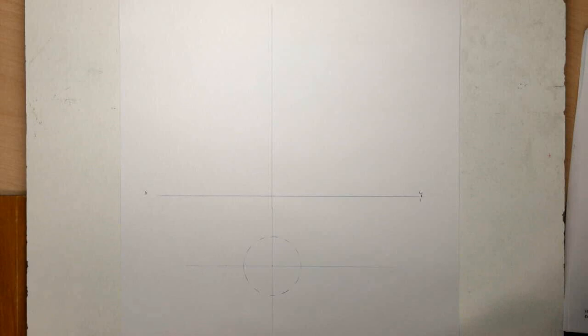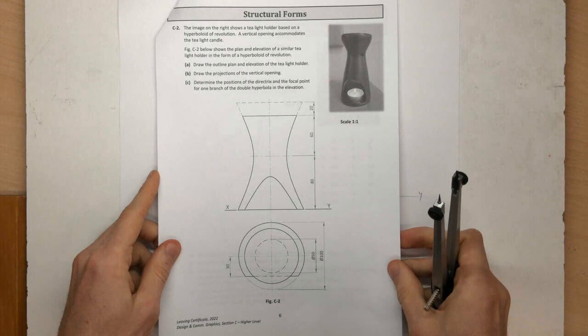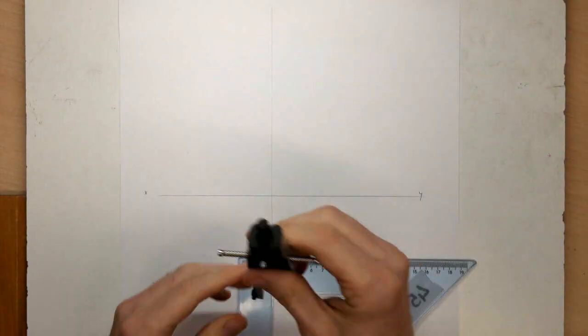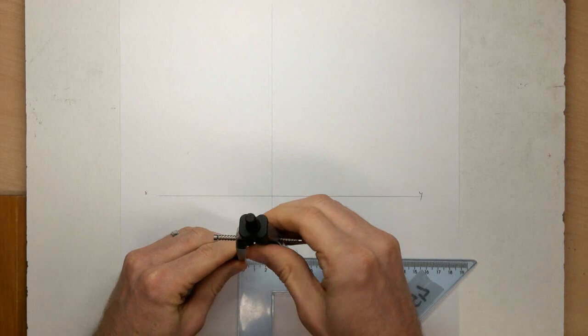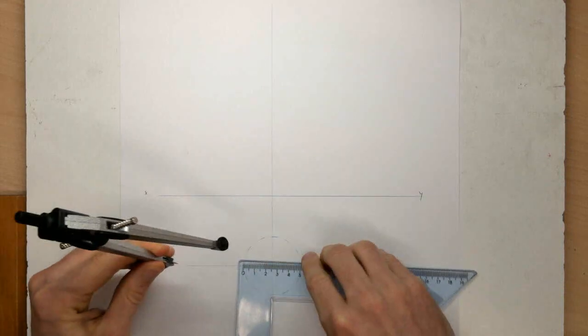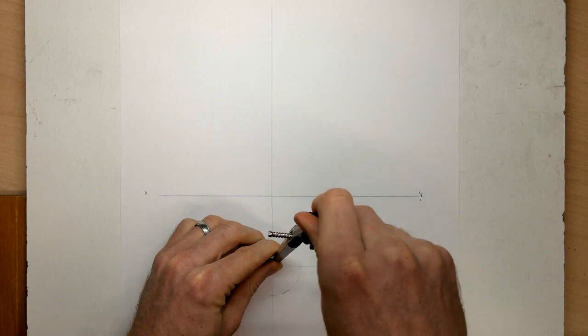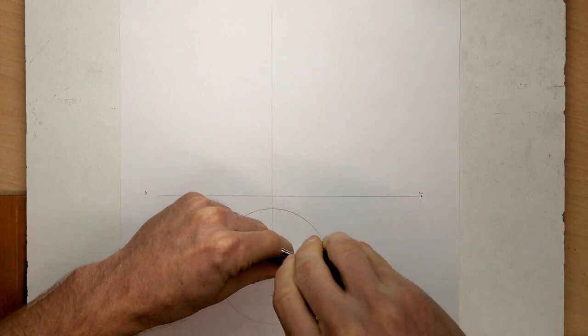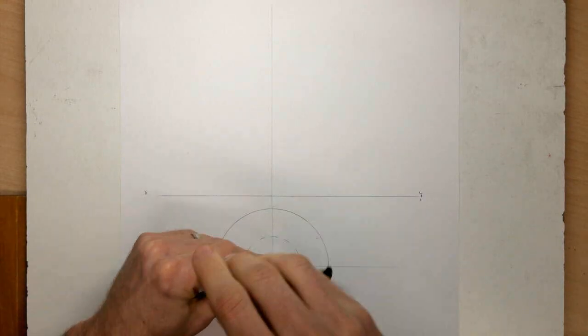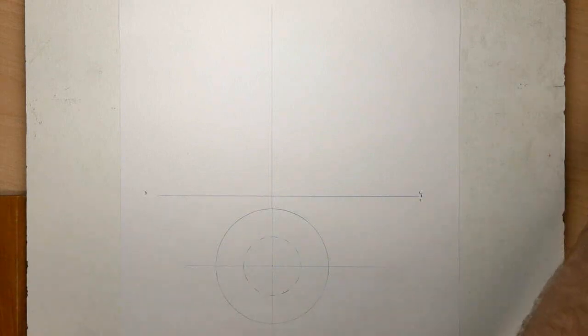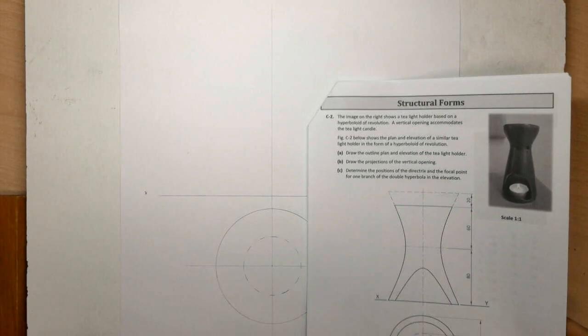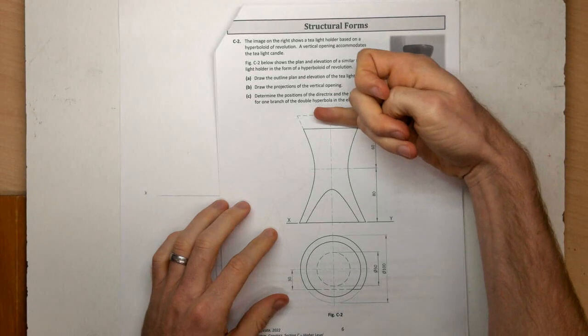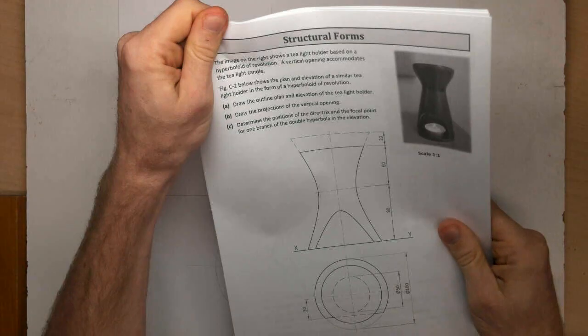Okay, and my base circle there is diameter 100, so radius 50. And we'll ignore this for a minute, the internal circle there, because that's to the top, so we need to find the top first, so we can find that radius.